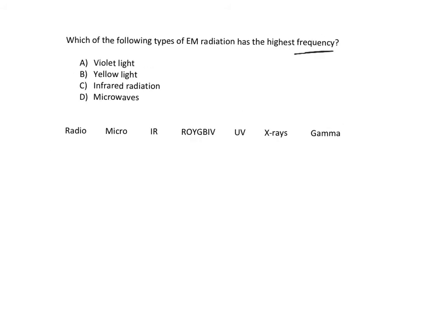Here it's asking about which has the highest frequency, but remember frequency is just the same thing as energy as far as we're concerned. High frequency means high energy. So again, if this is low energy and this is high energy, the highest frequency is the one that's going to be furthest to the right. So here's violet light, in visible. Here's yellow light, infrared, and then microwave. So of our choices, violet light has the highest frequency and the highest energy.